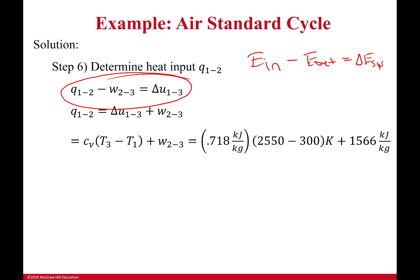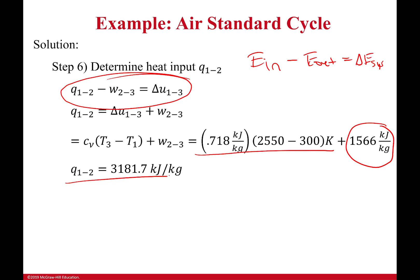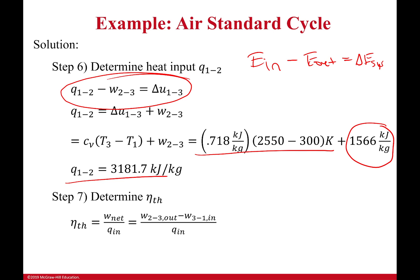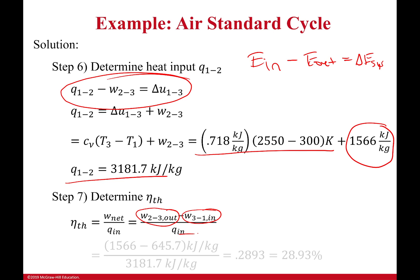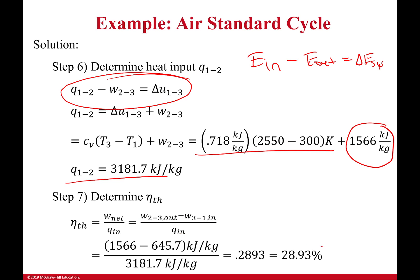Solving for heat input: I use the change in internal energy from state 1 to state 3, plus the work output. That gives me 3,181.7 kJ/kg for Q_in. Now, with heat input and net work (work out minus work in), I can solve for thermal efficiency: net work divided by heat input. I get a thermal efficiency of 28.93%.